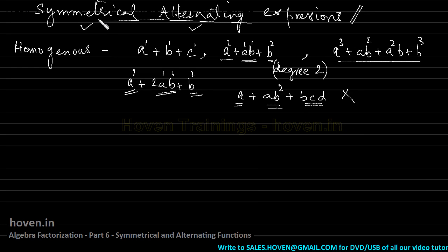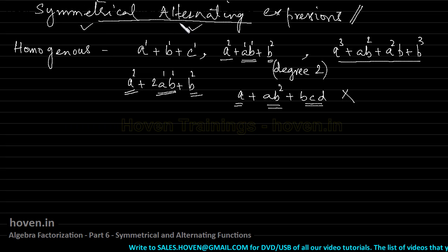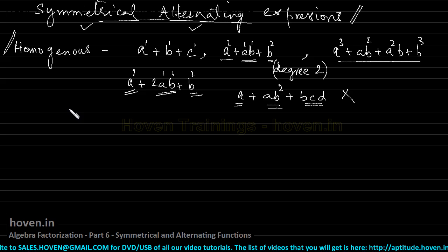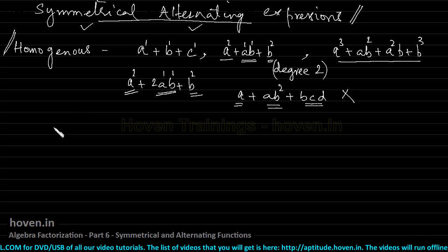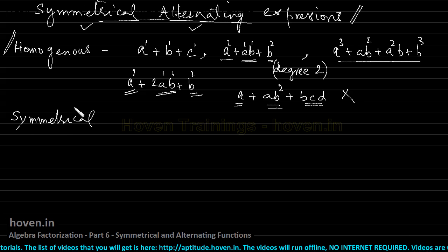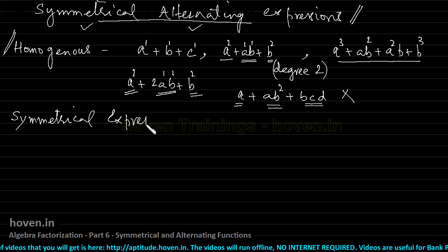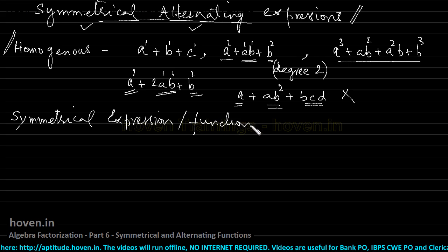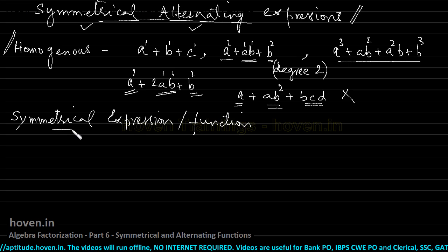The concepts of symmetrical expressions and alternating expressions apply only to homogeneous expressions. This is one thing you should understand at the outset. This is a difficult topic, but we are trying to understand it so that we can take some help in the examination. Now, what is a symmetrical expression? A symmetrical expression and a symmetrical function are one and the same thing — these two terms are used interchangeably.